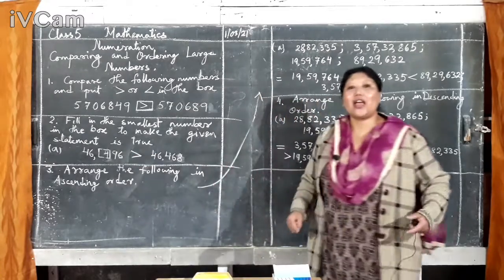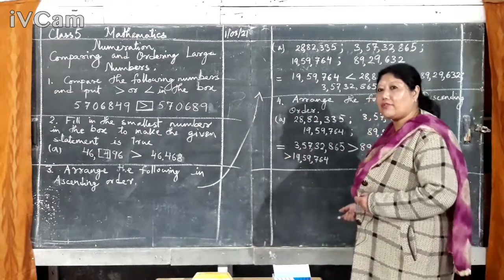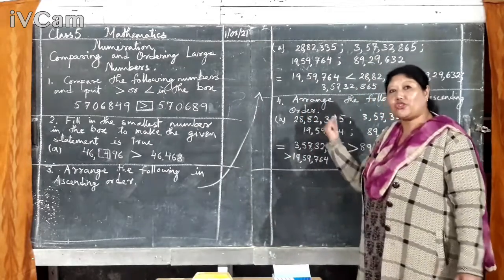Because, if you put 5 also, 6 also, if you put, it will be alright. Correct. This statement will be correct. But, the question is smallest number. So, 4 became smallest. Isn't it? So, you can write 4 here. Like this. You have to put your number to show that this statement is correct. Now, it is correct. Ascending means smallest to biggest.